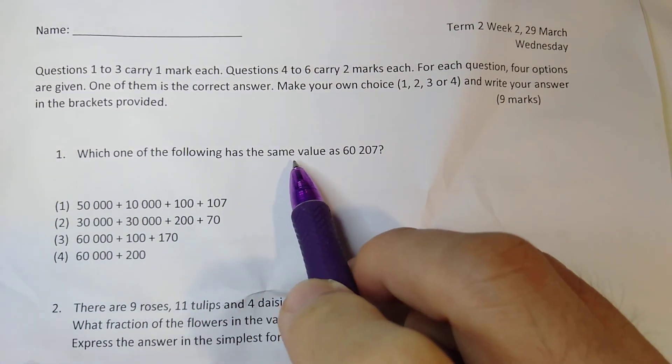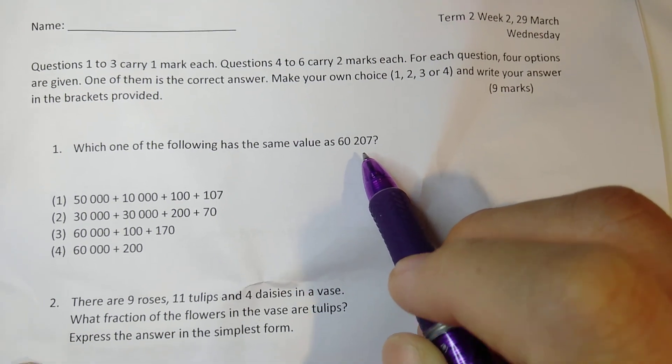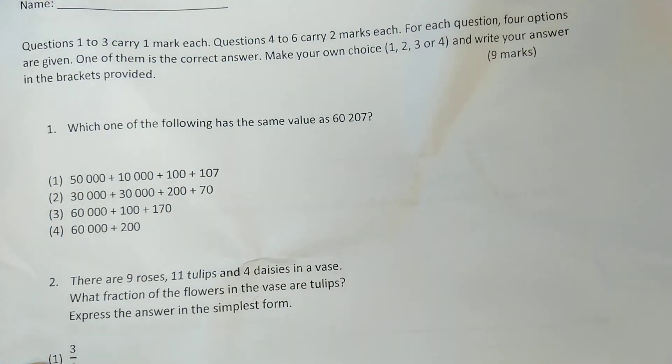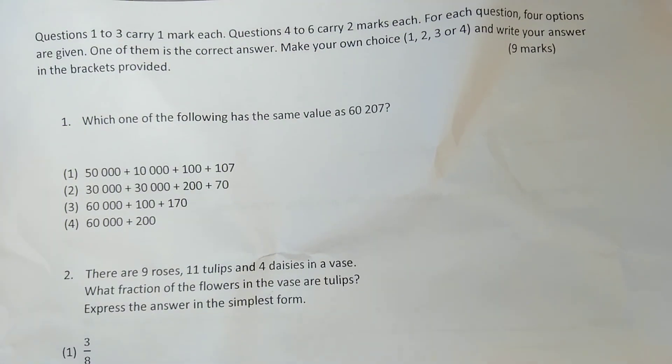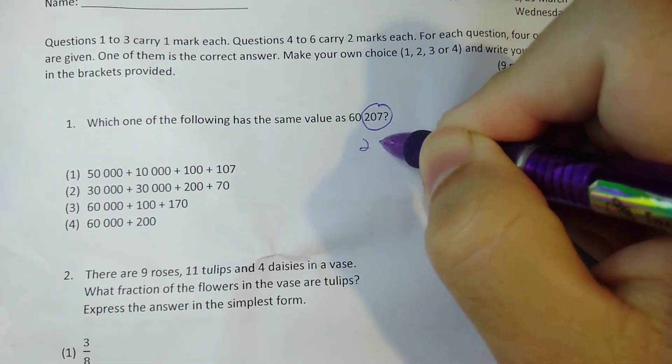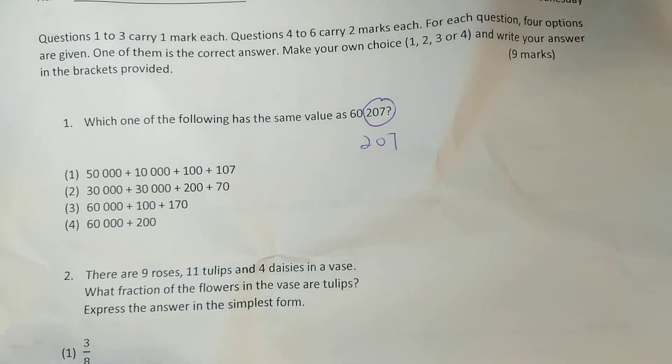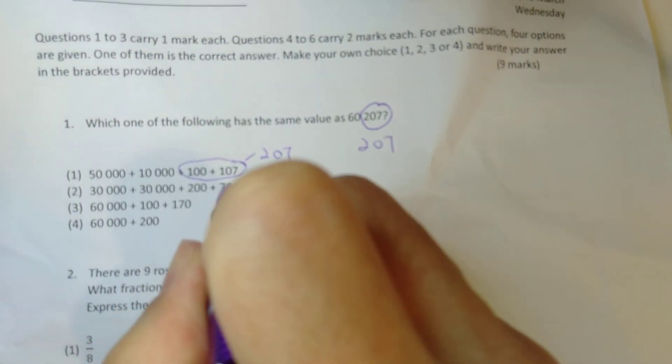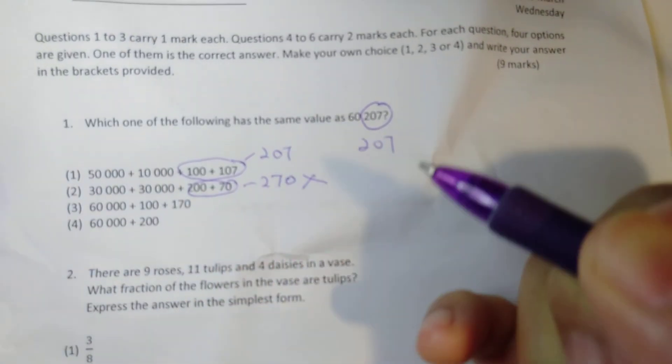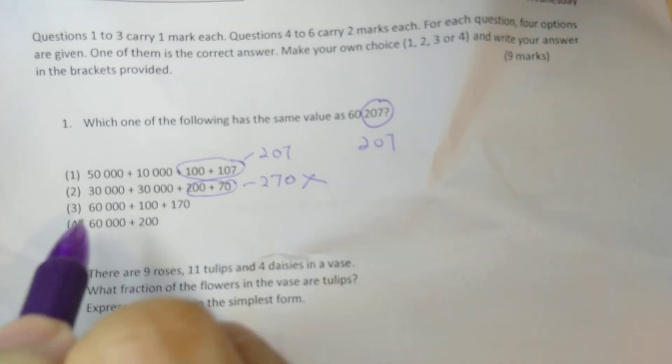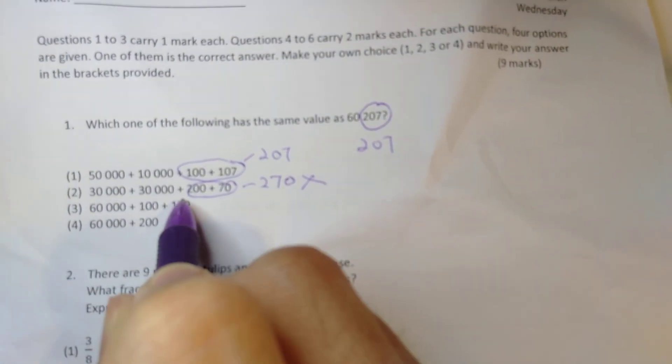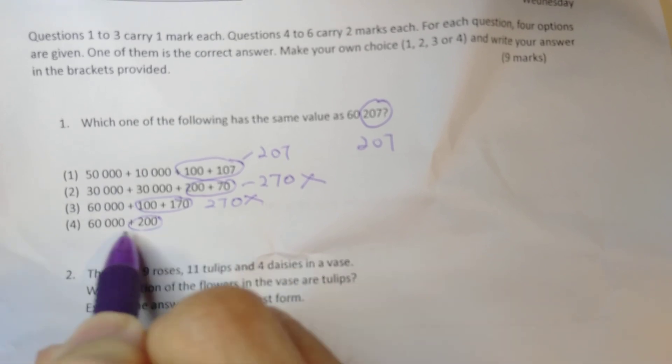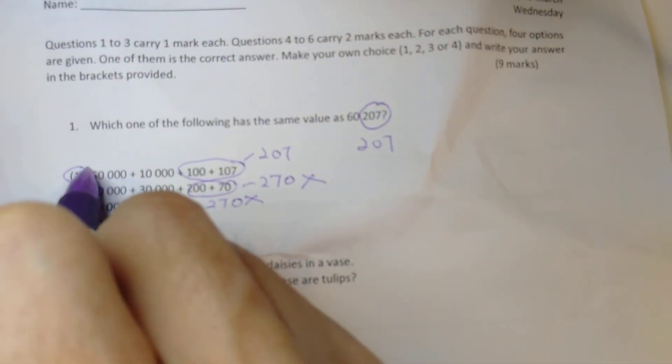Now which one of the following has the same value as 60,207? Now, so here there are various options. All I need to do is add them up to find out this. Now of course, there should be some ways of doing this faster. So let's give a tip. For example, I see 207. 207 can be gotten in a few ways. For example, I look at these two numbers. This gives me 207. This is a possible answer. This gives me 270. So this must be wrong. So by looking at this, like a shortcut, I can ignore the two numbers in front. Adding these two will give me 270. So this is also wrong. This is only 200. There's no 7 anywhere. This is also wrong. Just looking at that, you can tell the answer is number 1.